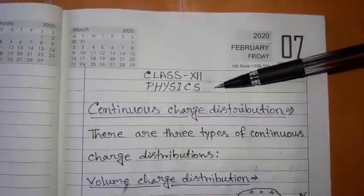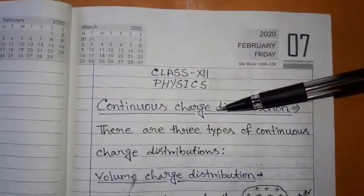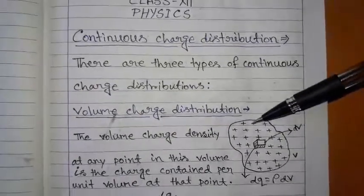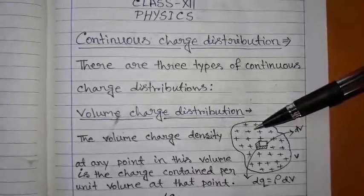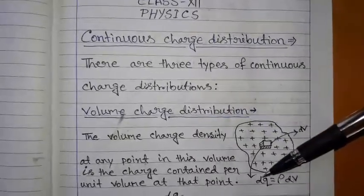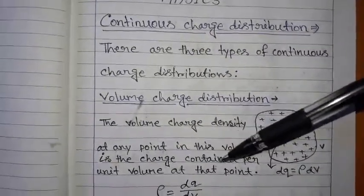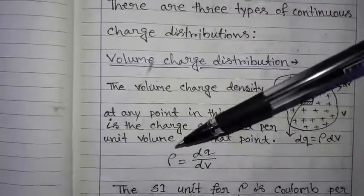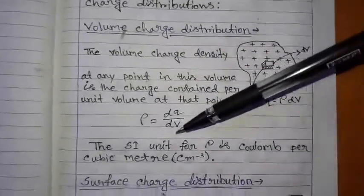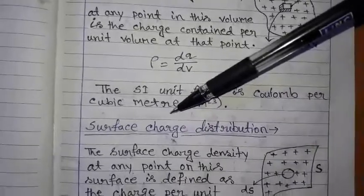Hello students, welcome to the physics class of class 12. Today our first topic is continuous charge distribution. There are three types of continuous charge distribution. First is volume charge distribution. Here we see a volume V containing some amount of positive charge. We consider an elemental volume dV having charge dq. The volume charge density ρ equals dq by dV. The SI unit of ρ is coulomb per cubic meter.